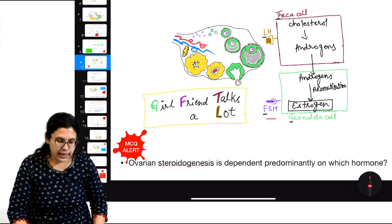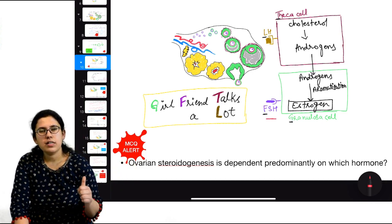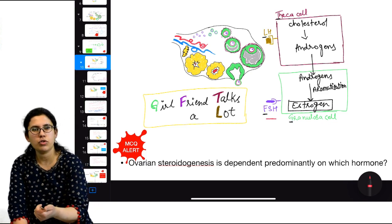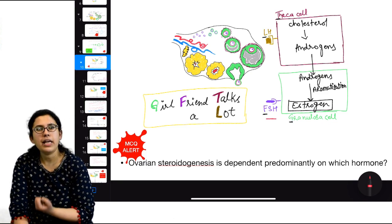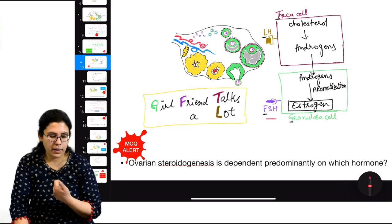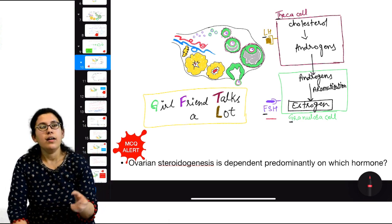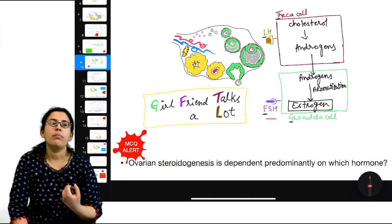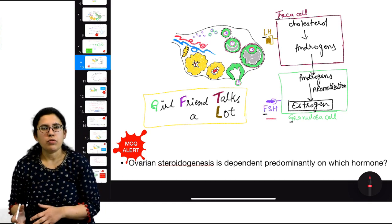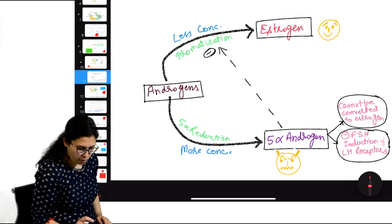Important MCQ: ovarian steroidogenesis is predominantly dependent on which hormone? Answer: LH, not FSH. Why? Because it is LH which causes theca cells to form androgens from cholesterol — that is the steroidogenesis. Under FSH, granulosa cells are simply converting androgens into estrogen (aromatization), not performing steroidogenesis. So steroidogenesis is happening under the effect of LH.